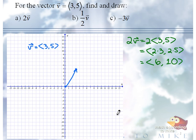So 6, 10, all right, okay, got it. So starting from the origin, going to 6, 10, oh, that was pretty good. I'll take it. So this is 2 vector V. Same direction, double the length.